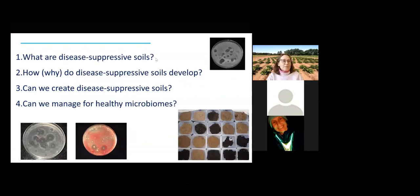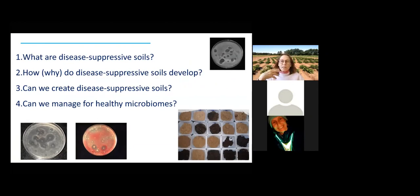First, we're going to look at some simple definitions of disease suppressive soils — what are they? Second, we want to explore some detailed data asking questions about how, or more importantly, why did this suppressive soil develop in a particular potato production system? Third, we want to translate that information to the potential for managing soil communities for disease suppression. And finally, we want to raise the concept of management for a healthy soil microbiome that supports crop health and productivity.